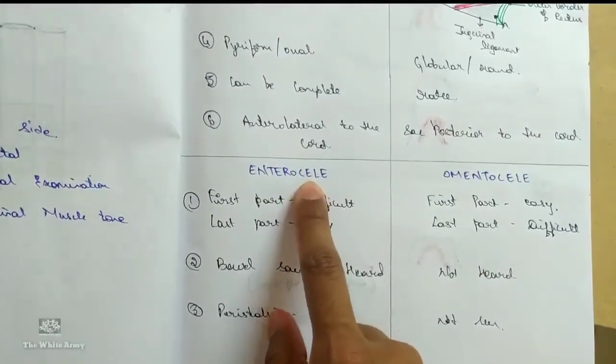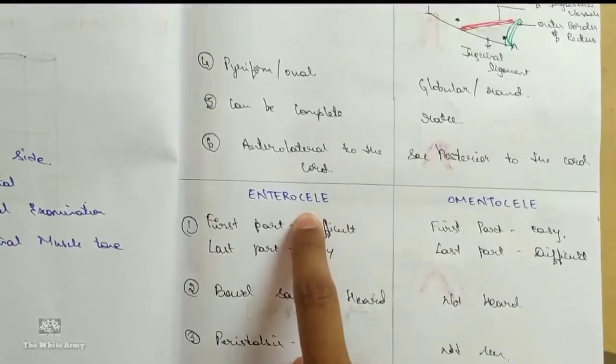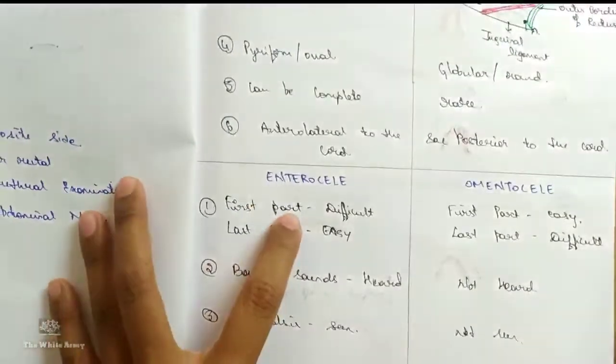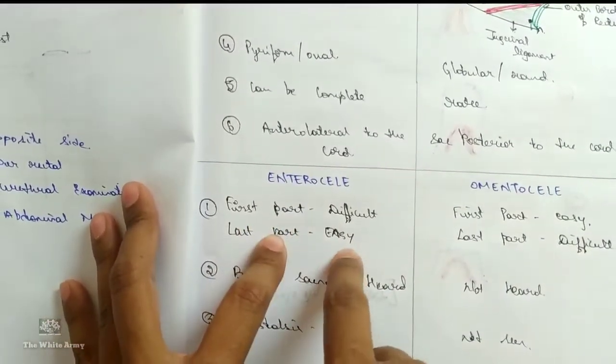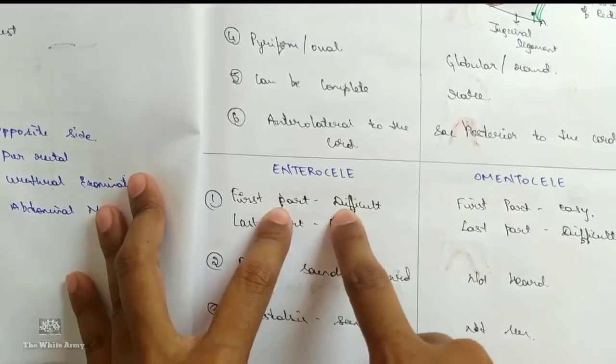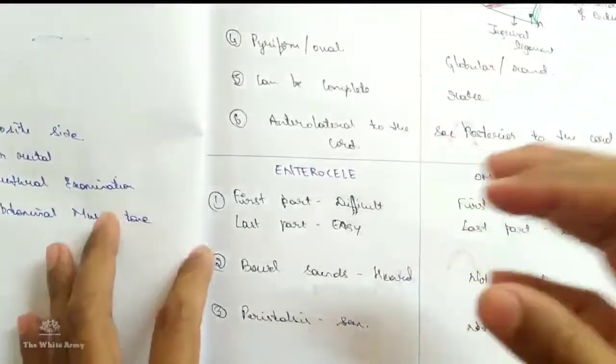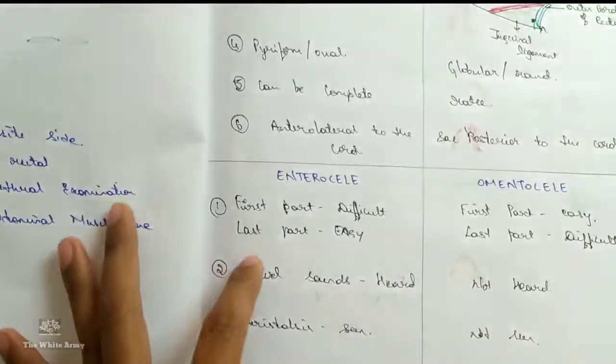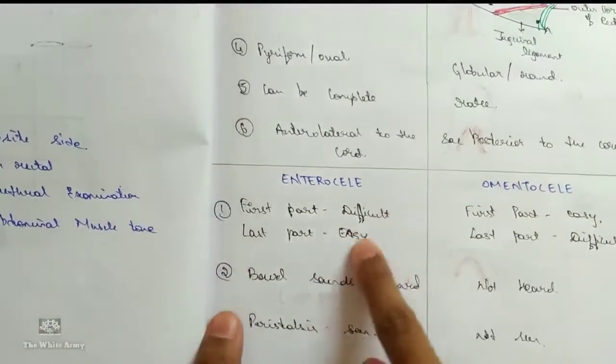And enterocele and omentocele. You need to know clinically how do you differentiate enterocele and omentocele. Enterocele is very difficult to reduce for the first part and for the last part it is easy. Why is it so? Because while reducing the first part the contents, the gas and the contents, go and obstruct the deep ring.